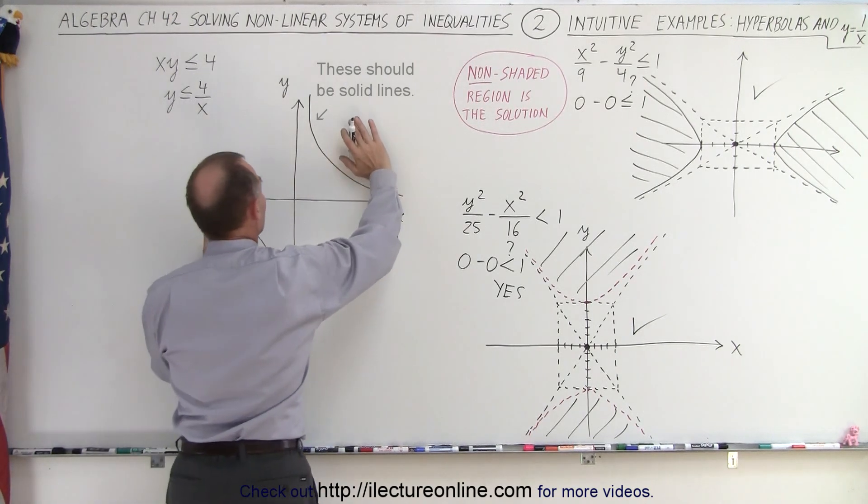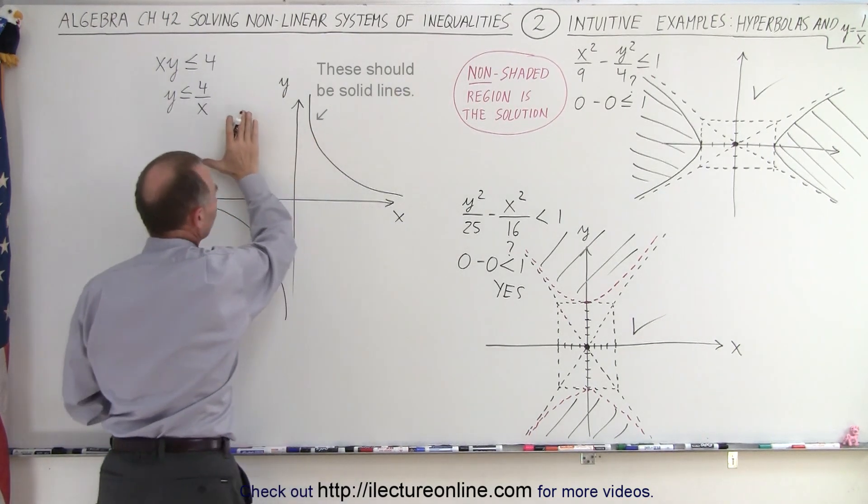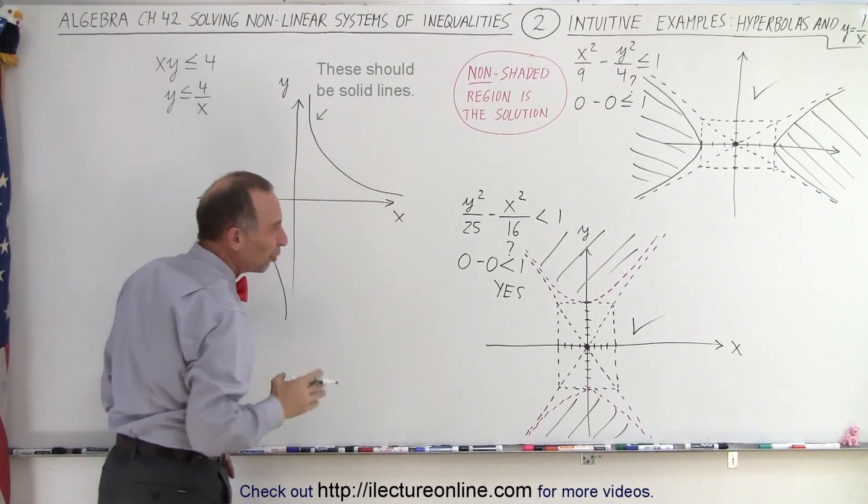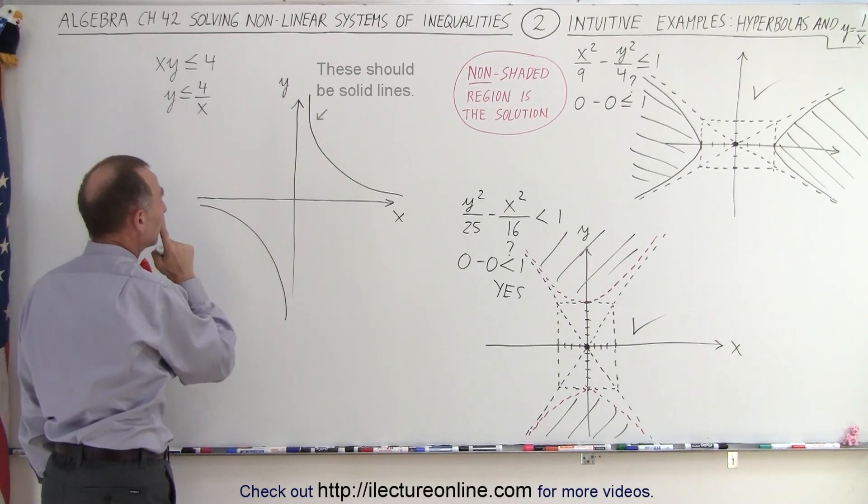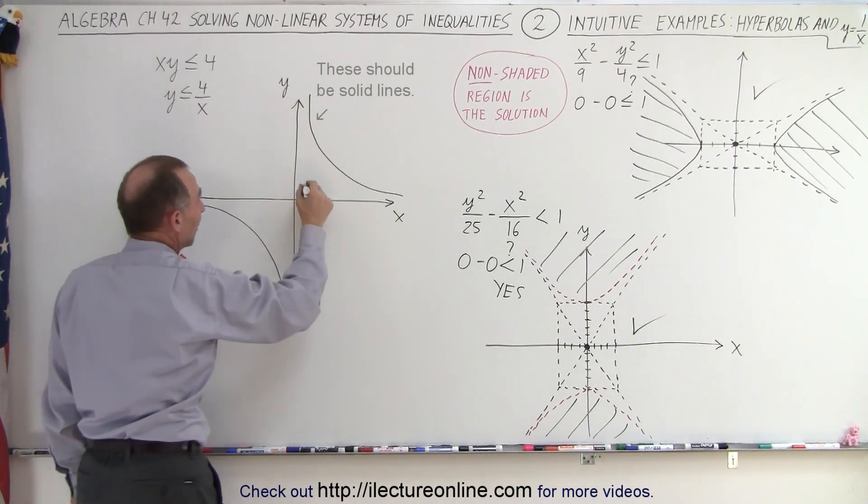Either the solution lies here or in between. Picking the point 0, 0 is not a good idea because we have x in the denominator, but we could pick 1, 1. Let's pick the point 1, 1.